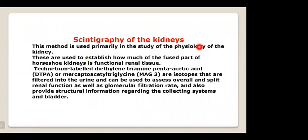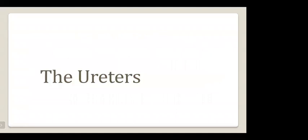Scintigraphy is used primarily to study the physiology or function of the kidney. DTPA and MAG3 isotopes are filtered into the urine and can be used to assess overall and split renal function as well as GFR, and also provide structural information regarding the collecting system. DMSA can be used for assessment of renal morphology, especially in the pediatric age group.